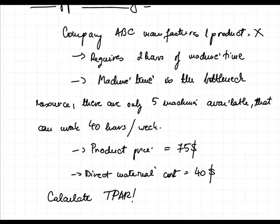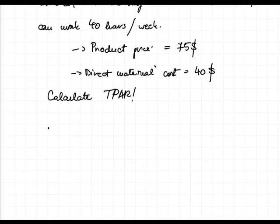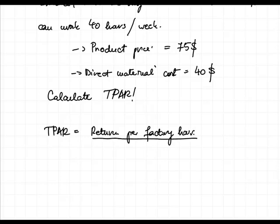The throughput accounting ratio is equal to the return per factory hour divided by the cost per factory hour. In order for a product or production process to be called efficient, this accounting ratio shall be higher than one. If the returns per factory hour are lower than the cost we are incurring, the ratio is lower than one, meaning it costs us more to produce the product than we gain from it.